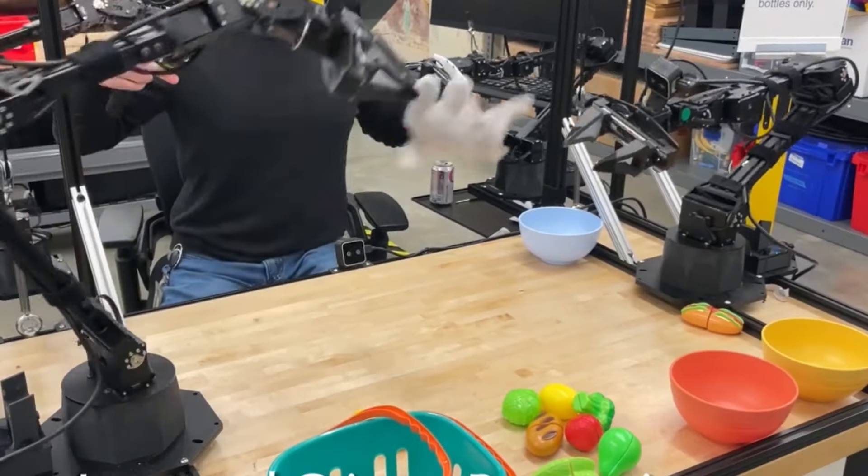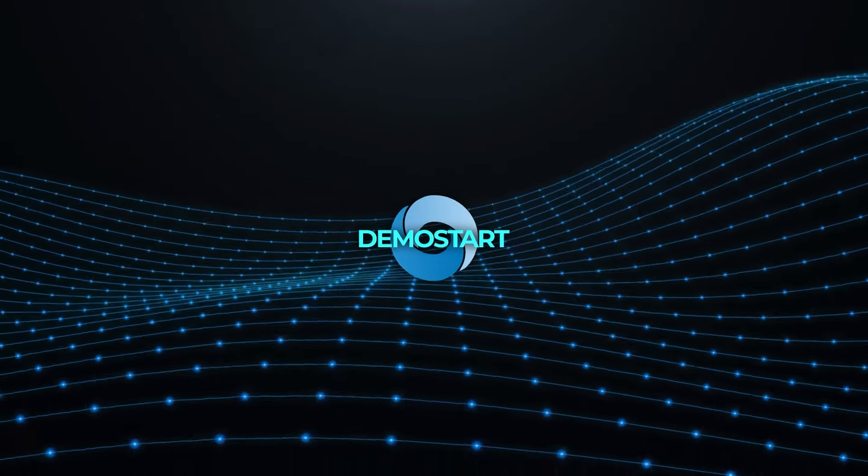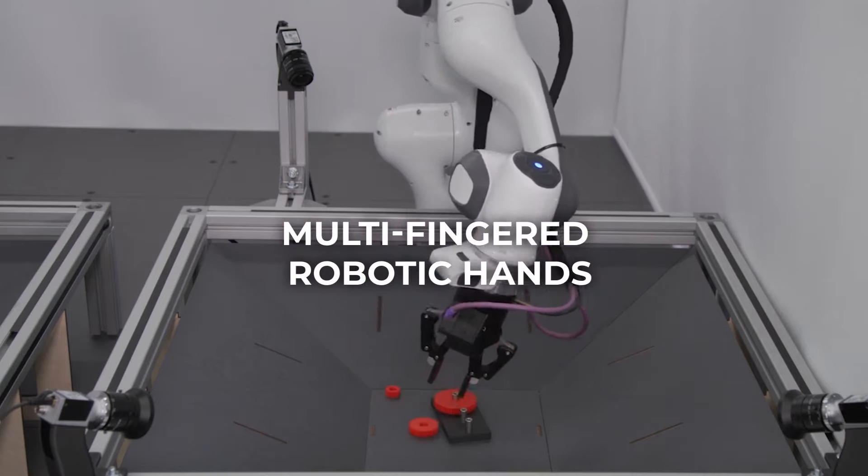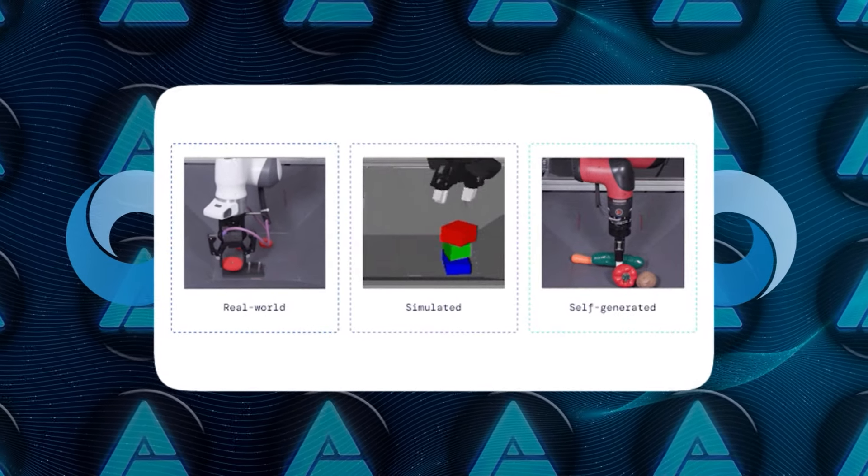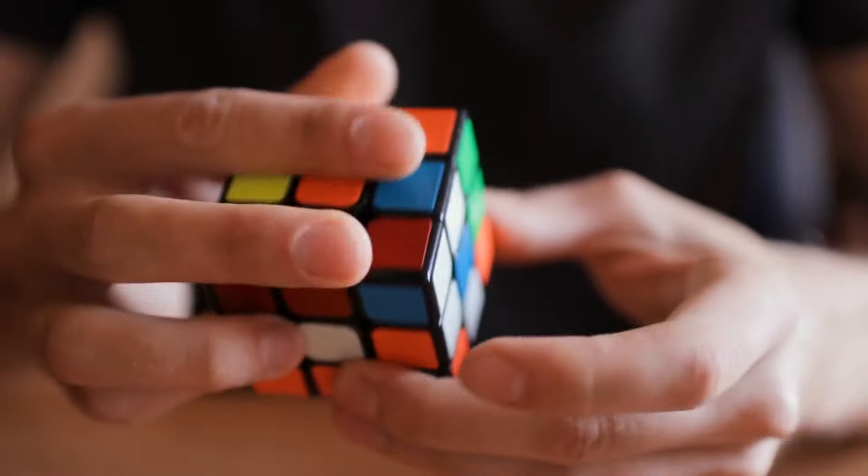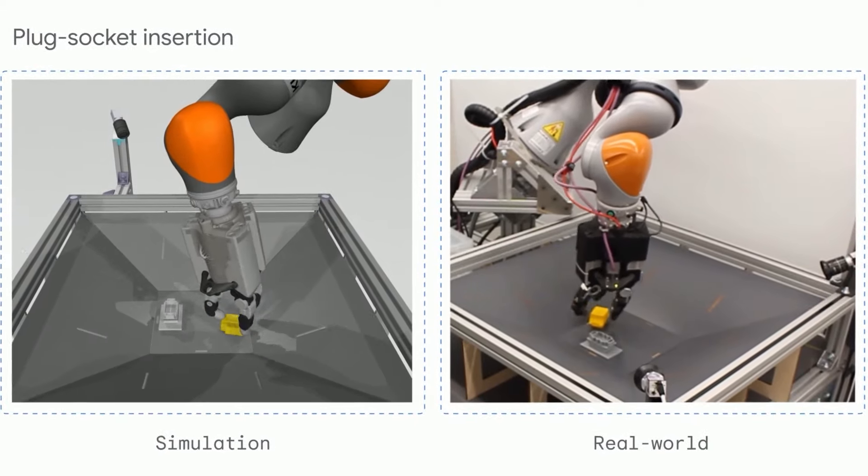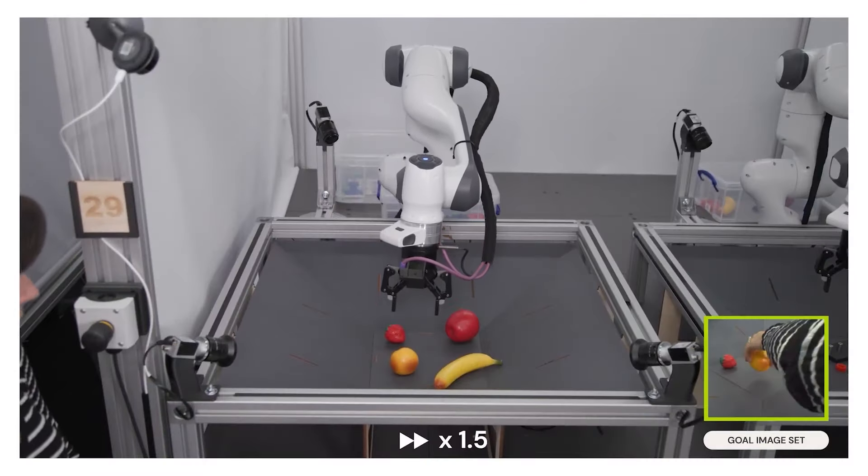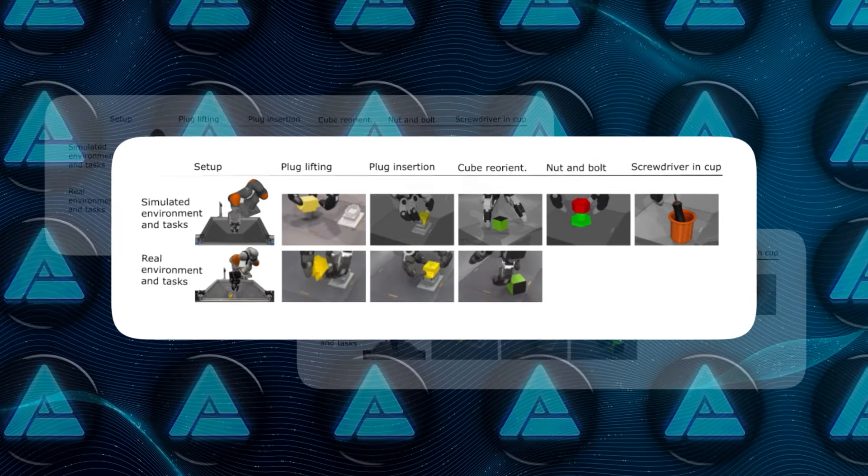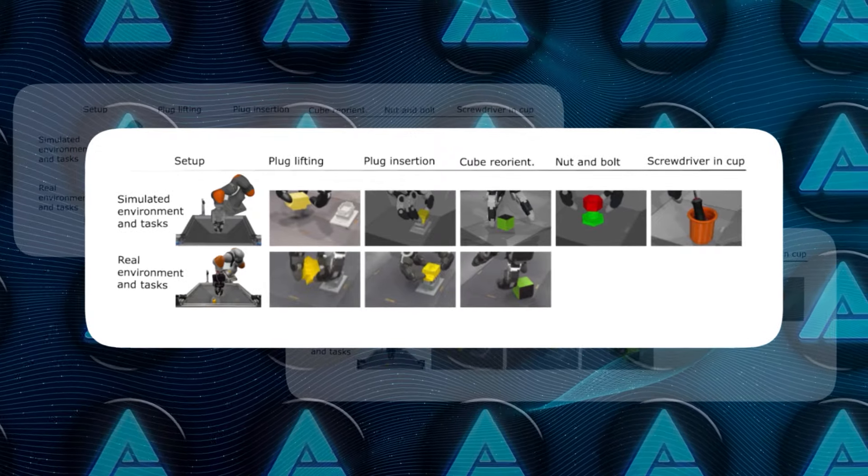While Aloha Unleashed focuses on two-arm coordination, Demostart tackles a different beast altogether: multi-fingered robotic hands. Imagine trying to teach a robot to manipulate objects using multiple fingers with the same dexterity as a human hand. That's where Demostart shines. This system uses reinforcement learning in simulations to help robots acquire the kind of finger dexterity needed for tasks like reorienting objects, tightening screws, or plugging cables into sockets.